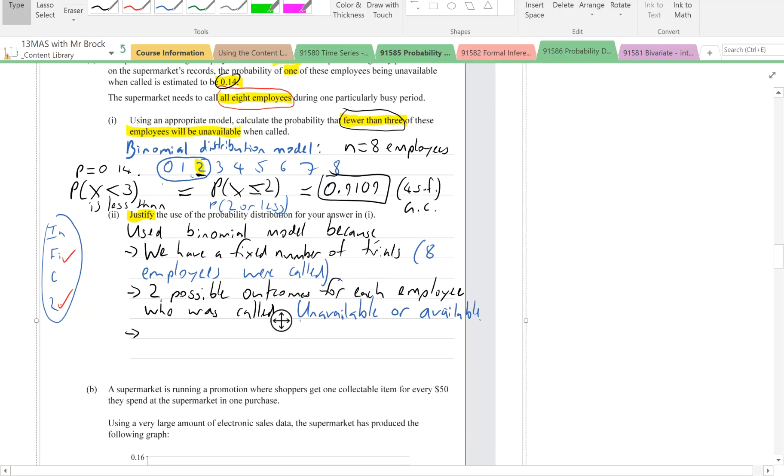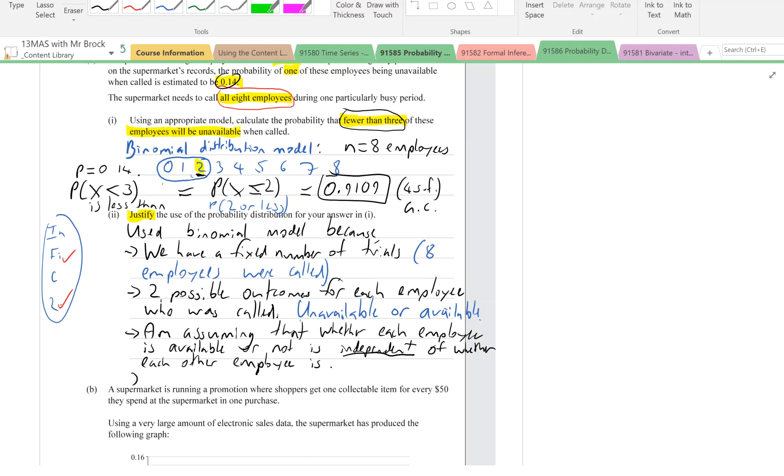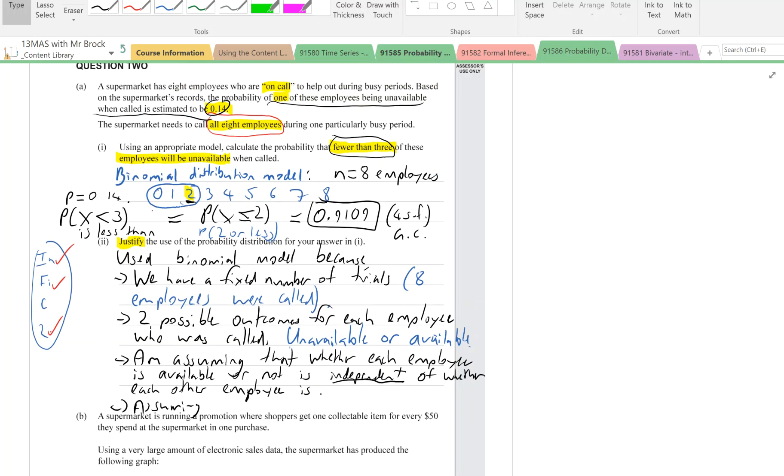We have to assume that whether one employee is unavailable doesn't affect whether another employee is unavailable. I'm assuming that whether each employee is available or not is independent of whether each other employee is.